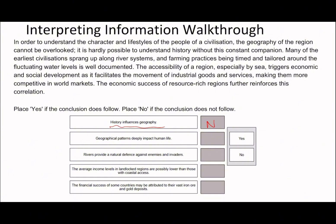Statement two: 'Geographical patterns deeply impact human life.' I would definitely say yes — that's what we were talking about, because it said civilizations sprang up along river systems and farming practices are timed and tailored around fluctuating water levels. Statement three: 'Rivers provide a natural defense against enemies and invaders.' I don't remember reading anything about enemies and invaders — it doesn't talk about defense at all — so I would say no.